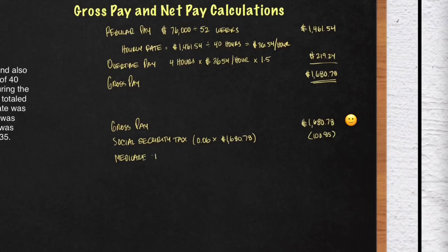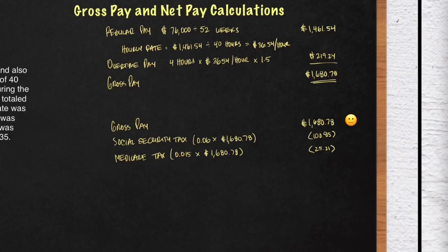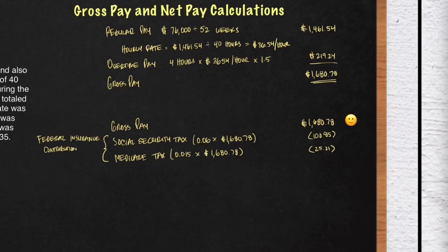The next deduction is Medicare. Medicare in this particular problem was 1.5%. Multiply that by his gross, and you should get a deduction of $25.21. I'm rounding calculations to the nearest cent. These first two deductions — social security tax and Medicare tax — are required by a certain law called the Federal Insurance Contributions Act, or FICA.